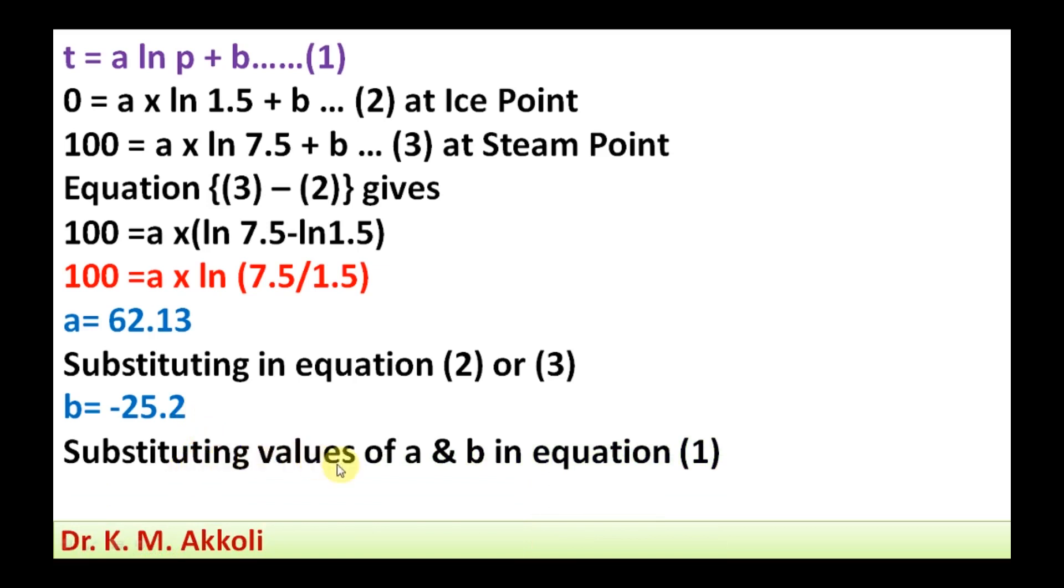Then substituting these values of a and b in equation 1, if you substitute the value of a and b, then we are going to get the temperature equation as t equal to 62.13 ln p minus 25.2.